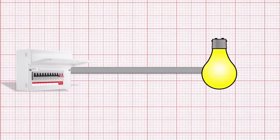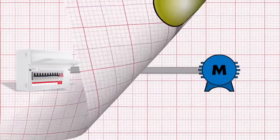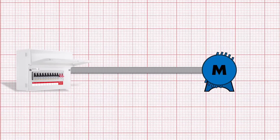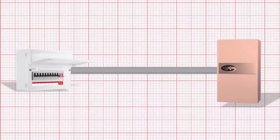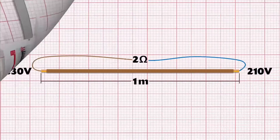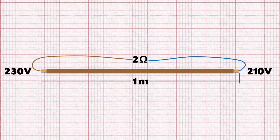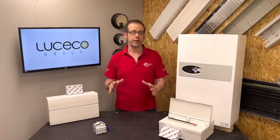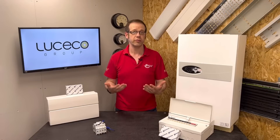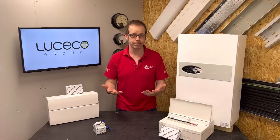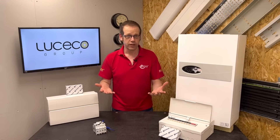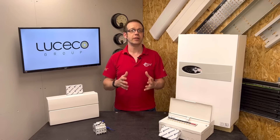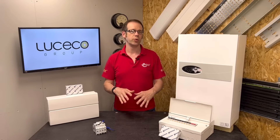If it was a light at the end, it would glow dimly. If it was a motor, it would run slowly or possibly not at all. If it's an electric boiler, it might not heat the water enough. We've exaggerated the resistance of the conductor here to illustrate the point. In reality, the resistance of our conductors feeding the circuit is very, very low — that's why we use conductive materials for our conductors. So the volt drop our circuits experience in the real world is generally much smaller than this.